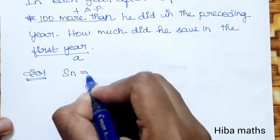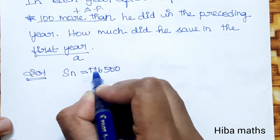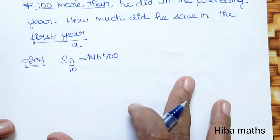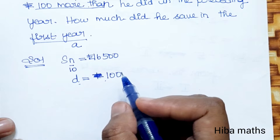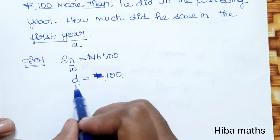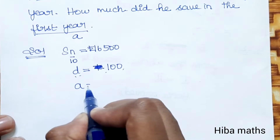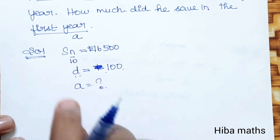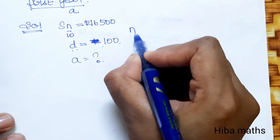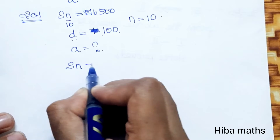S of N is Rs.16,500 and N value is 10 years. He saved Rs.100 more than the preceding year, so D value is 100. N value is 10, so we can write N is equal to 10 years.